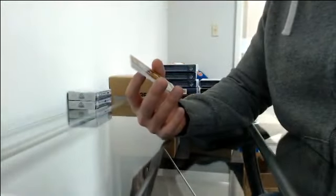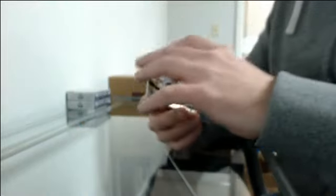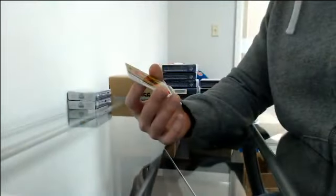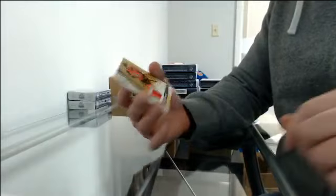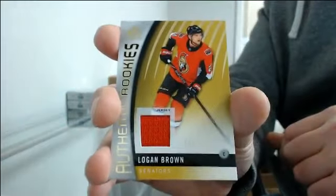Authentic rookie jersey 4 to 399 for LA, Adrian Kempe. And authentic rookie jersey 132 to 399 for Ottawa, Logan Brown. Box 9.